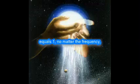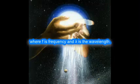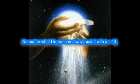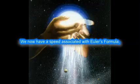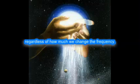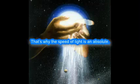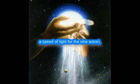By writing 1 = fλ, as in c = fλ, with c = 1, where f is frequency and λ is the wavelength. No matter what f is, we can always pair it with λ = 1/f, ensuring that c = f × (1/f) = 1. We now have a speed associated with Euler's formula, and it's the same for every instance of the formula, regardless of how much we change the frequency. That's why the speed of light is an absolute, and note that we have a speed of light for the cosine wave and a speed of light for the sine wave.